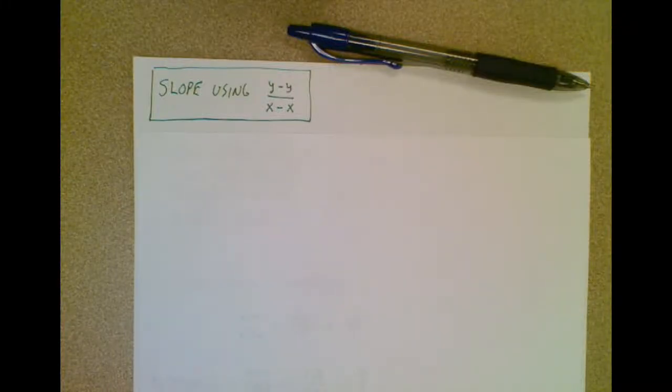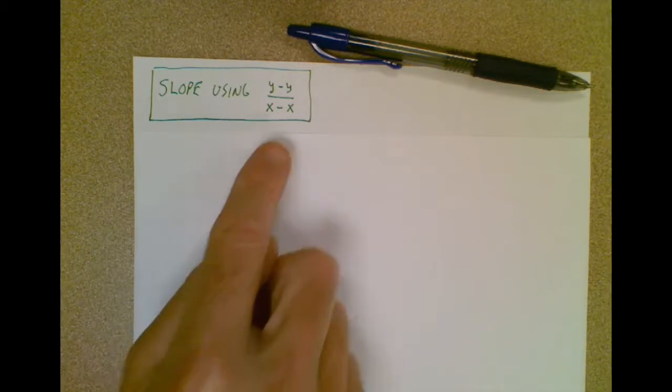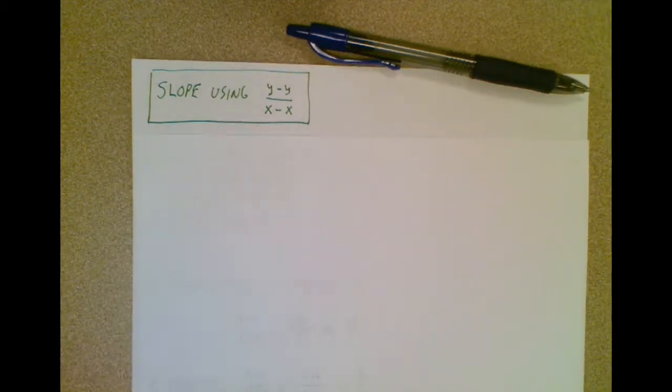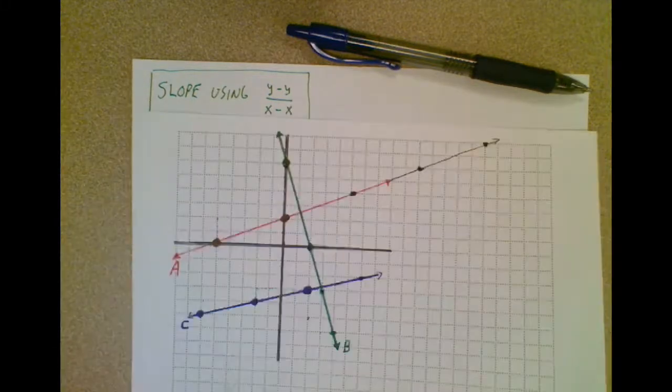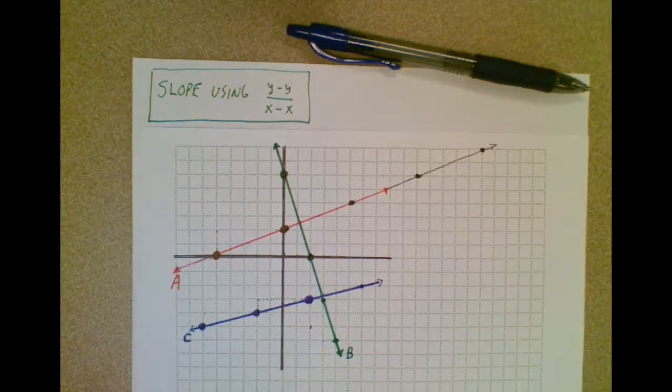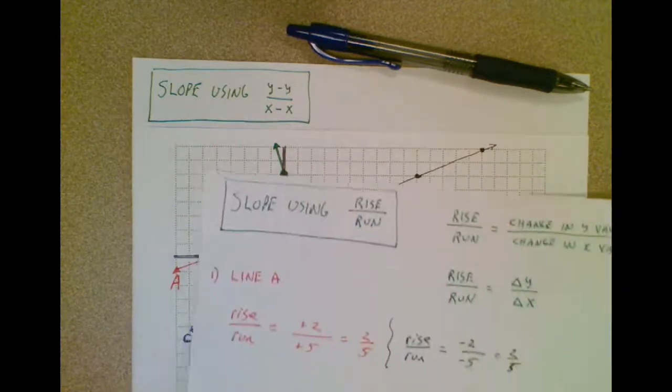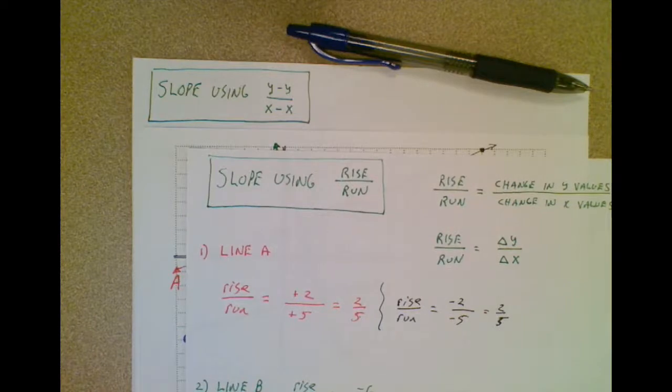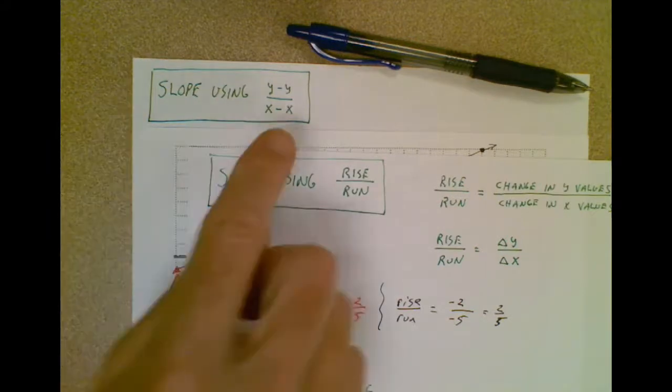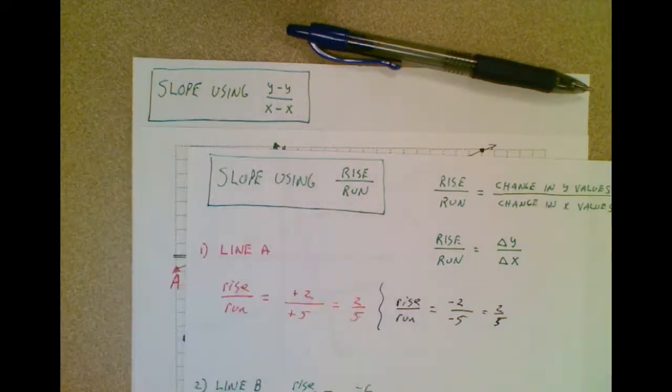We're going to take a look at a second way to calculate slope, and in this case we're going to use the formula y minus y over x minus x. This is going to be useful when you don't have a graph, because if you have a graph, you're probably going to want to just do your counting, your rise over your run. But if you don't have a graph, it's not easy to count the rise over the run, and you would then opt to use y minus y over x minus x.